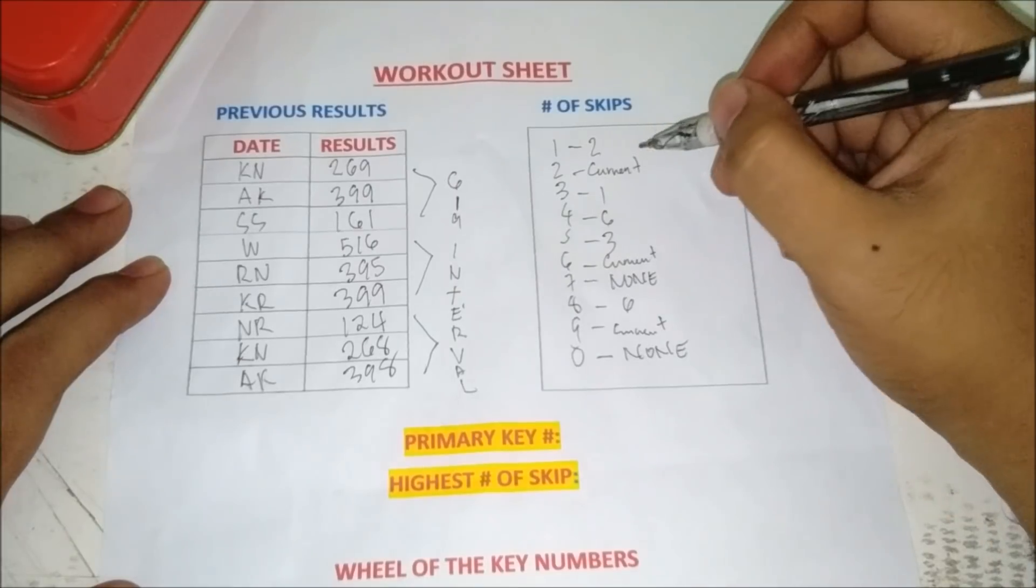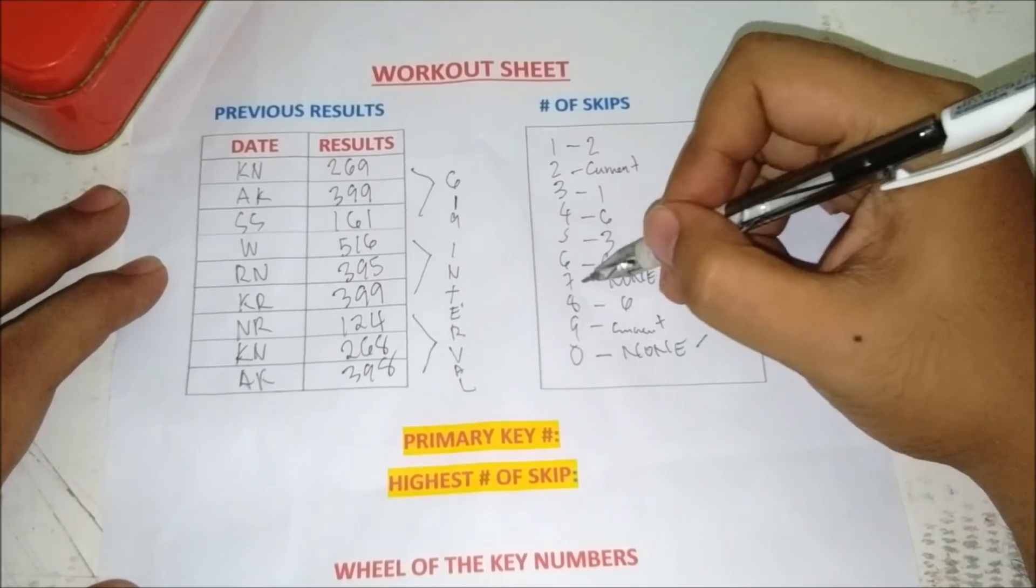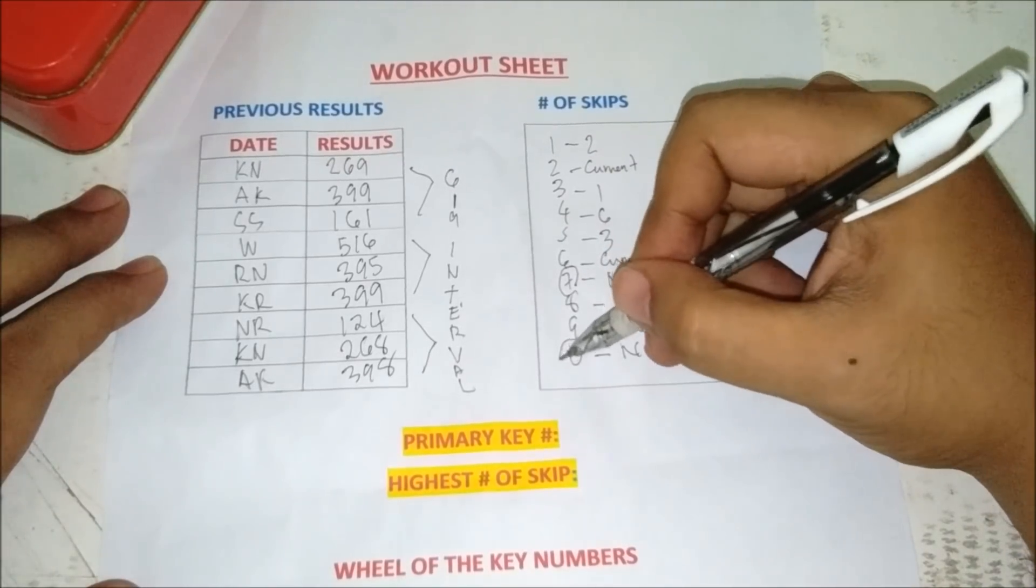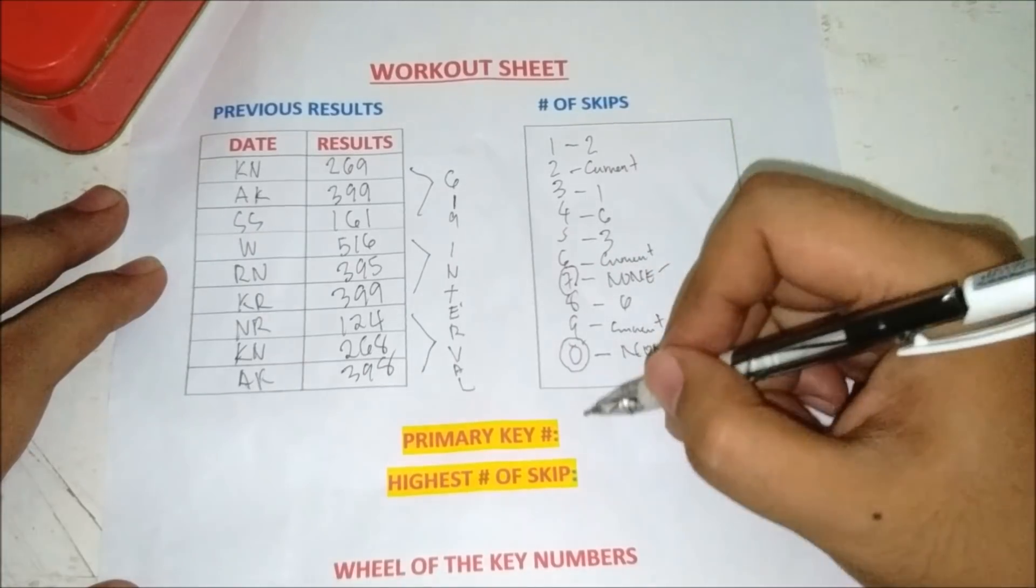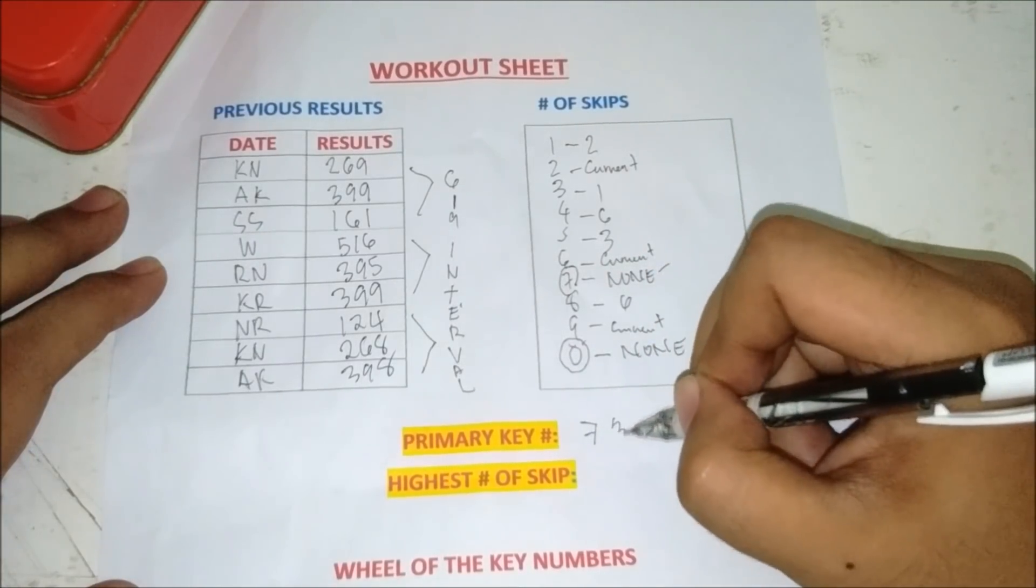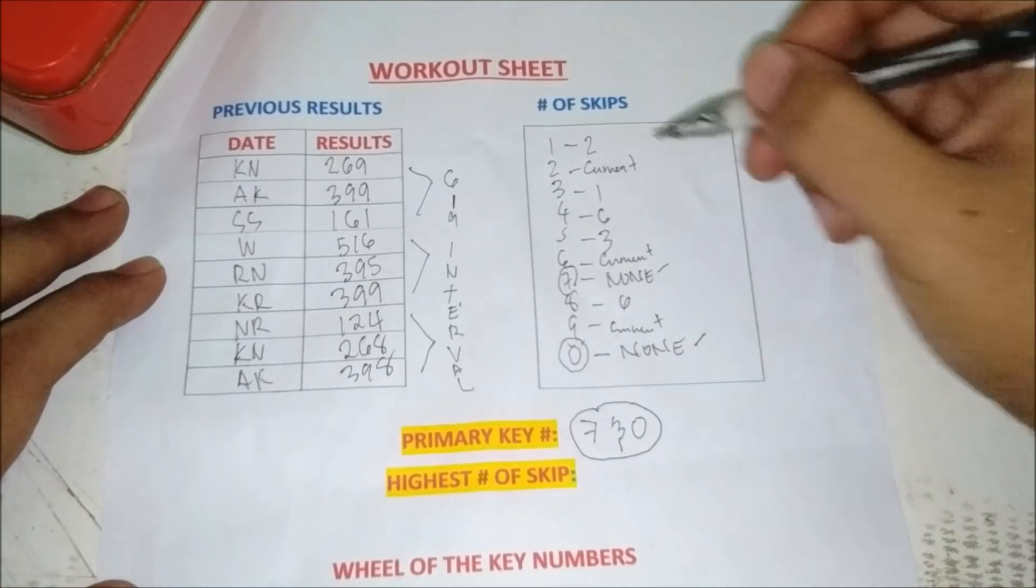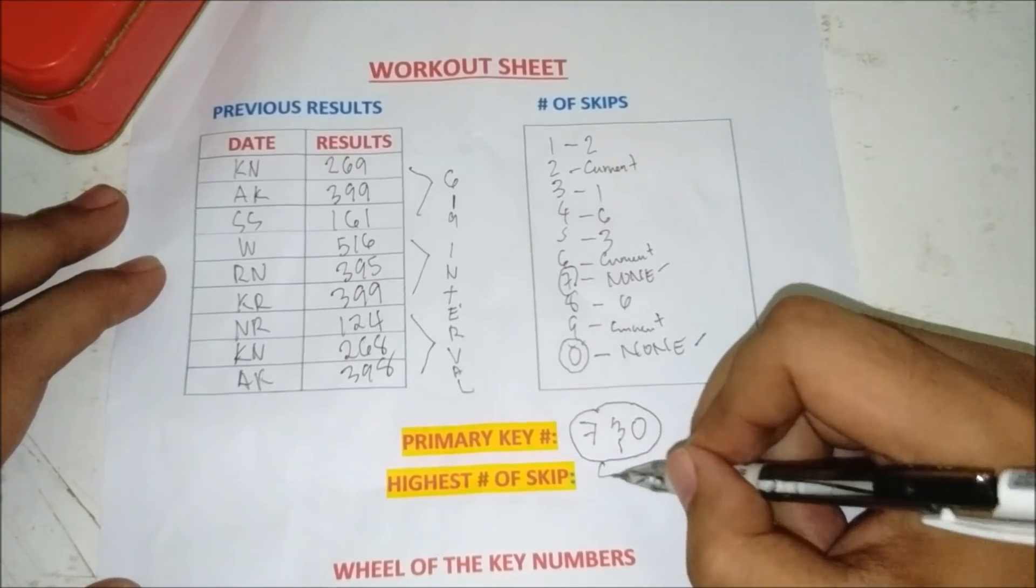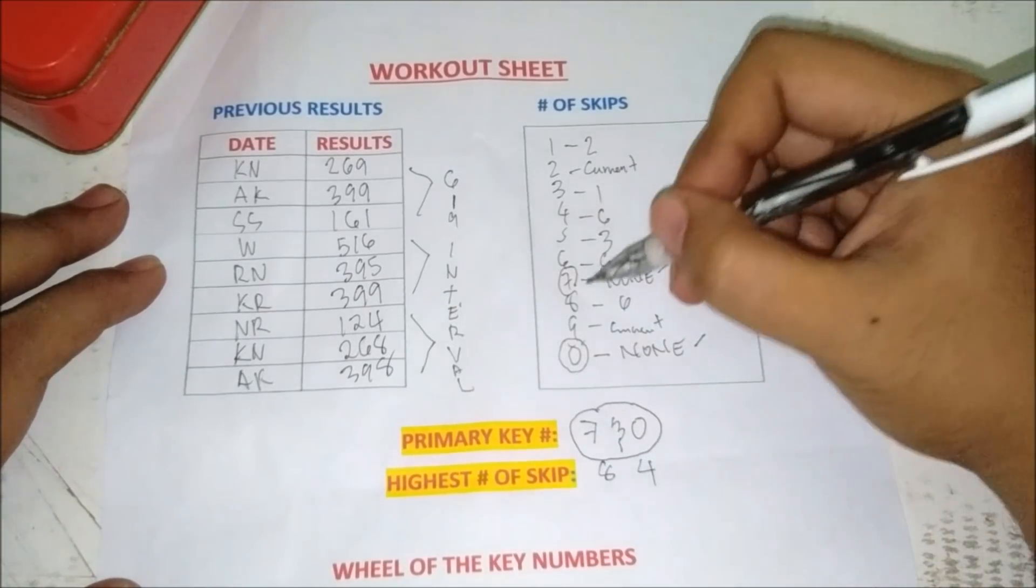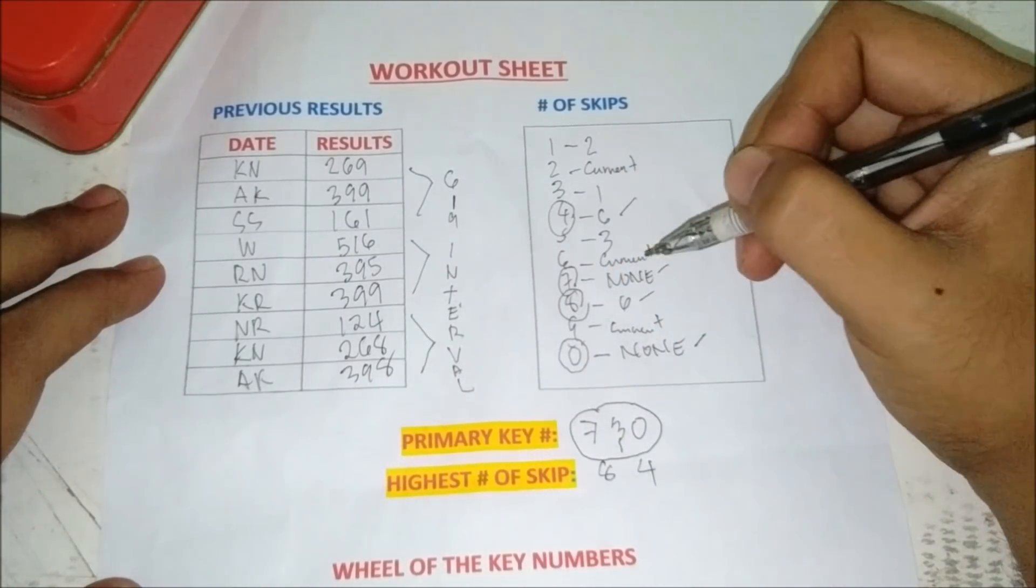Okay, as you can see, seven and zero are the primary key numbers. We identified two key numbers, seven and zero. And eight and four is the number that has the highest skip.